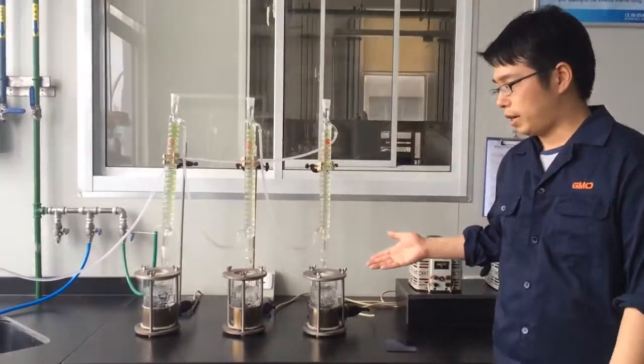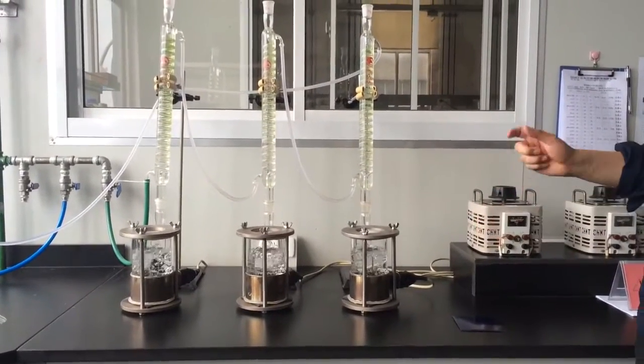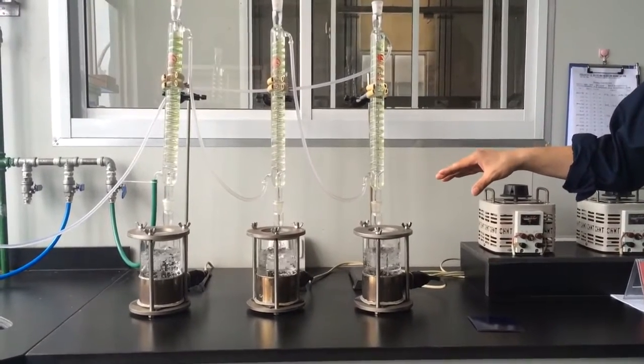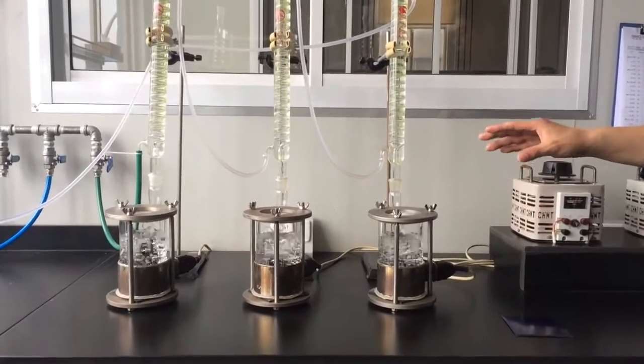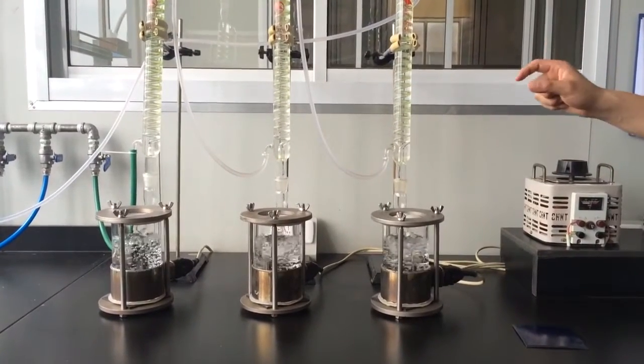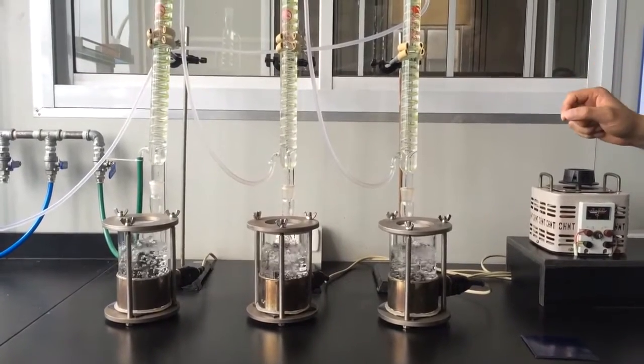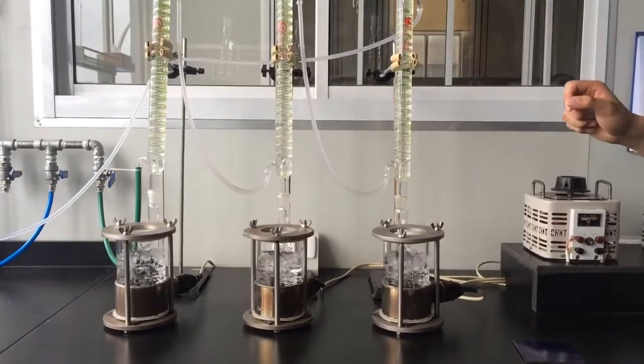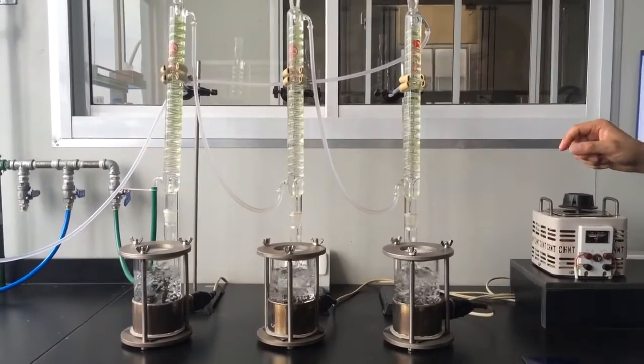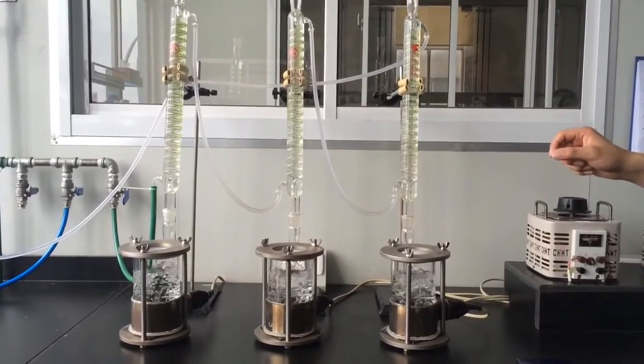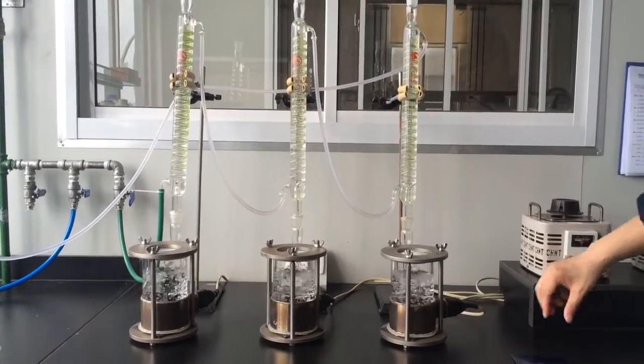This is the device to test the dissolution rate of the enamel. We will put an enamel sample in this device with boiling water. After 42 days, we take out the enamel samples and weigh them. The enamel weight loss should be lower than 3.5g per square meter, but the GMO samples, the loss is lower than 3g per square meter. It's far better than the standard.